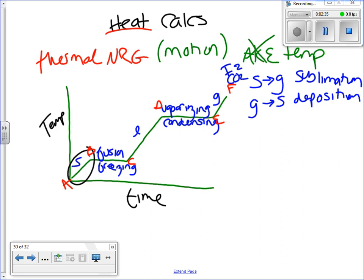Here, A to B is increasing kinetic energy. Potential energy is staying the same. C to D is the same thing. E to F is also the same thing. You can see that they go up. That's where your temperature is increasing.